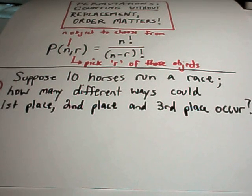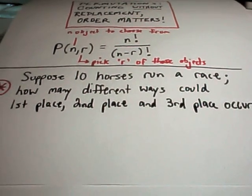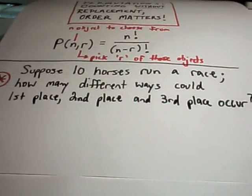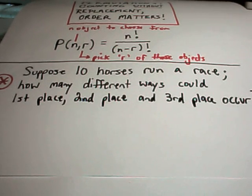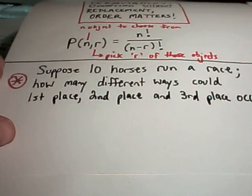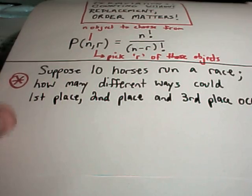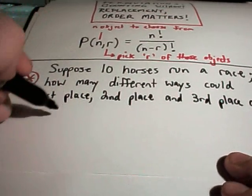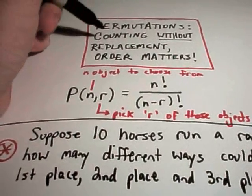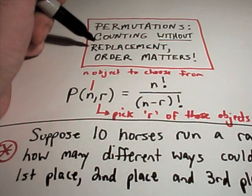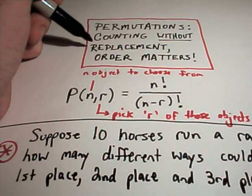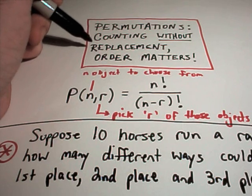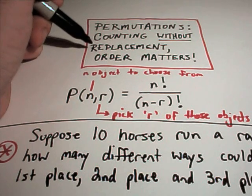So if different horses come in different places, that would be considered a different outcome. So maybe you're going to buy a ticket, and if you win, to win you have to get the exact order in which the horses, the top three horses finish. Well again, in this case, it's a permutation because I'm counting without replacement. If a horse comes in first, it can't come in second or third. Once it finishes, it's done, so I can only count an object one time.